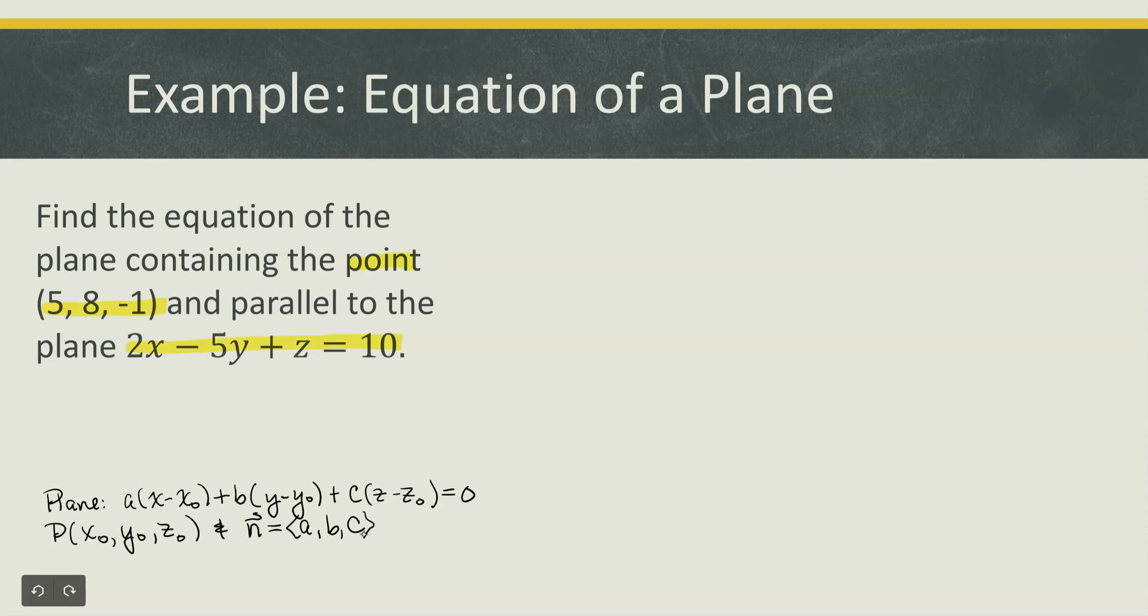So in this particular case we do know what our point should be. The point in the plane that we will use is 5, 8, negative 1. We don't yet know what our normal vector should be but we have sufficient information to find it.